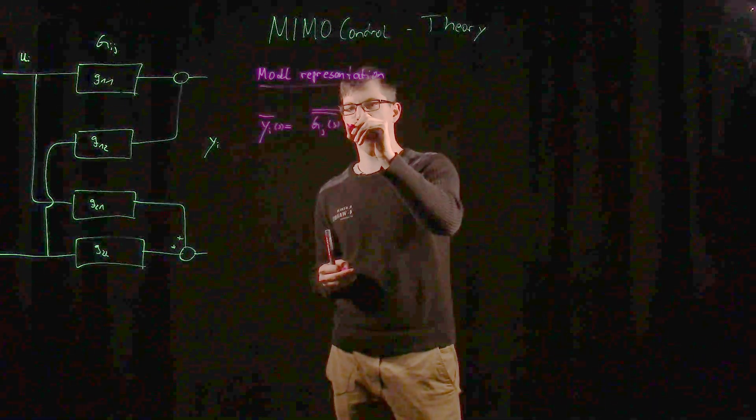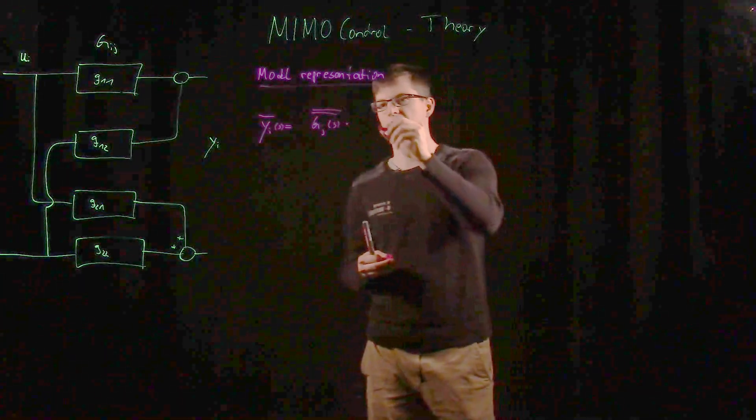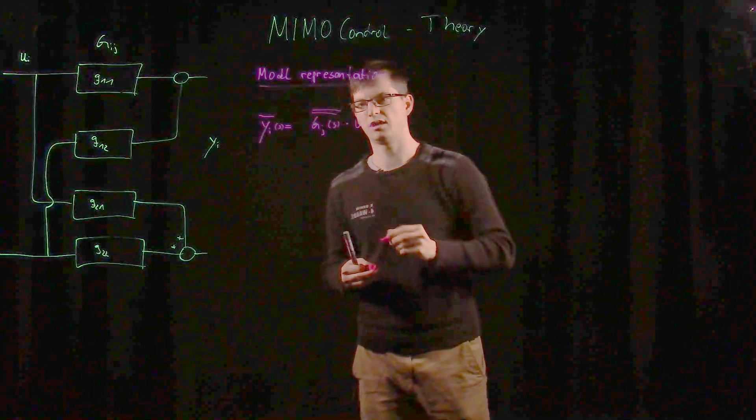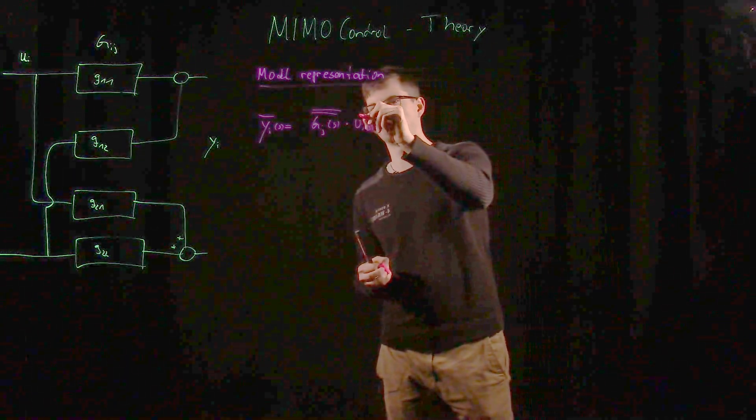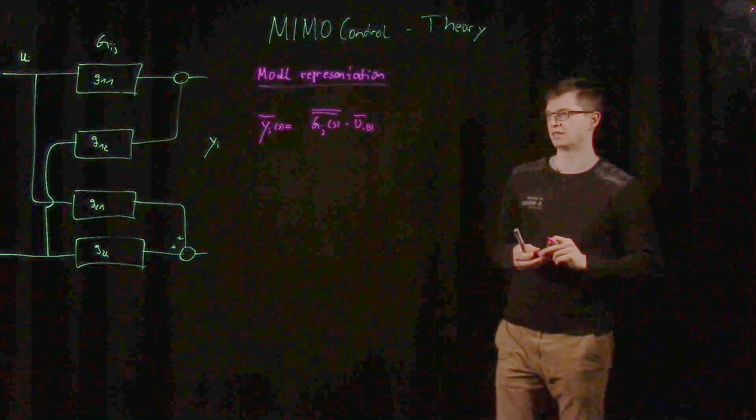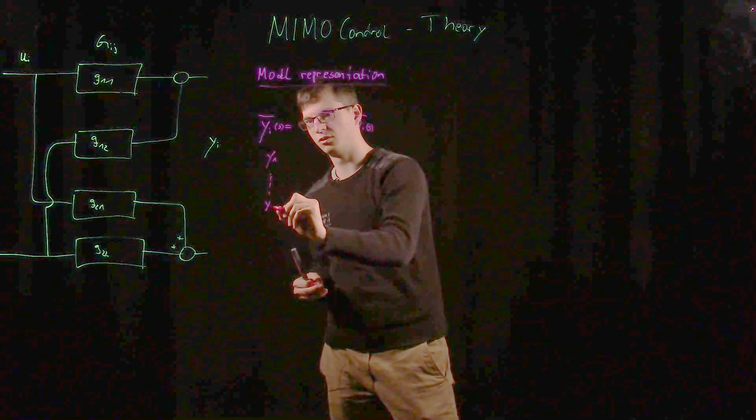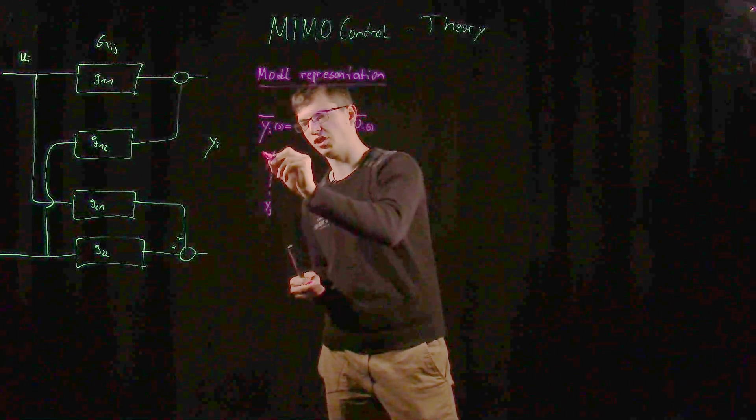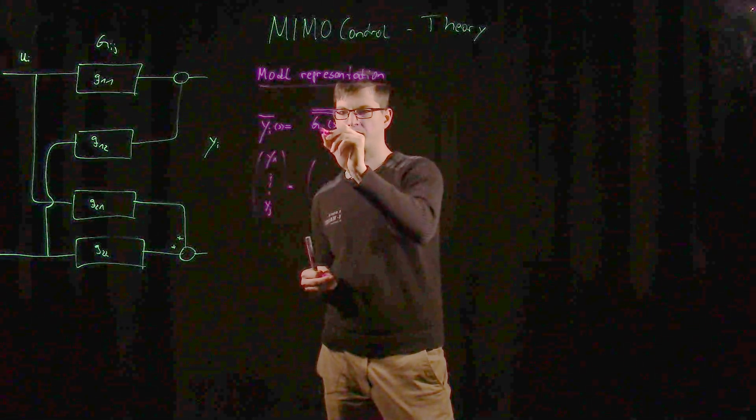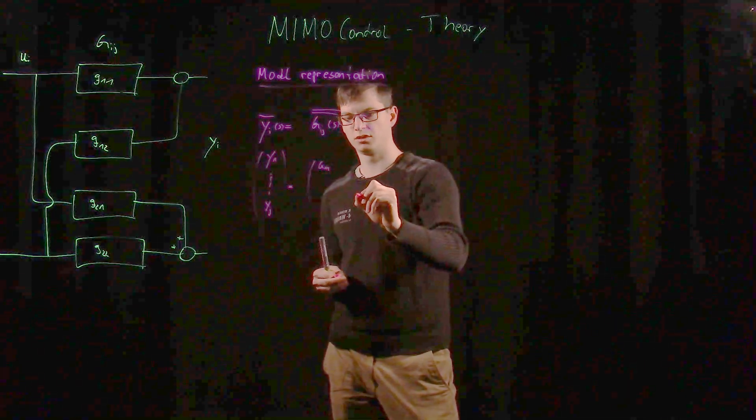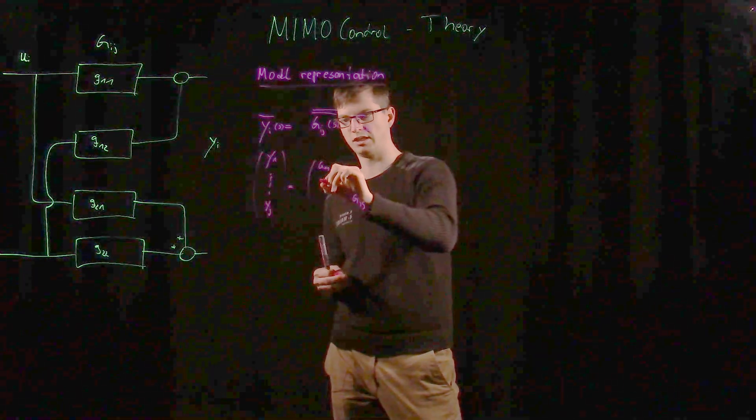We want to multiply this by the input values u_e, and they are no single scalar values anymore too, so they are vectors as well. Actually that's it. You would write down a vector from y1 to y_j, and here you would have a matrix from g_1,1 to g_j,j.